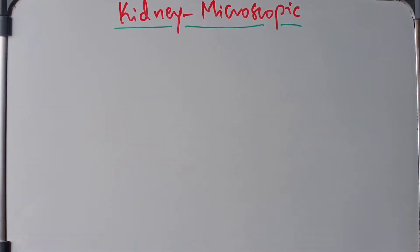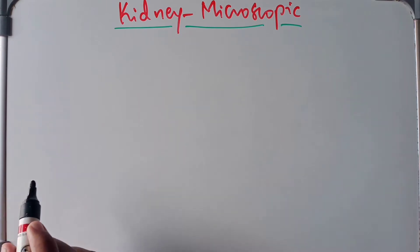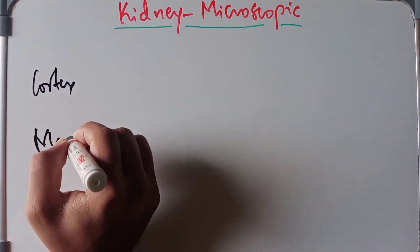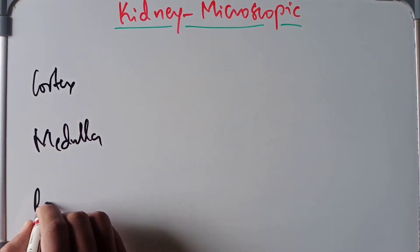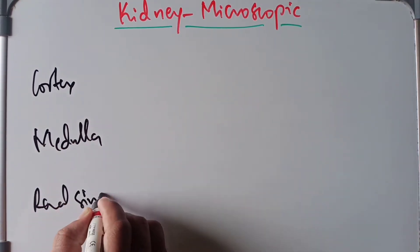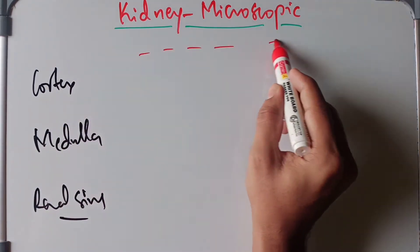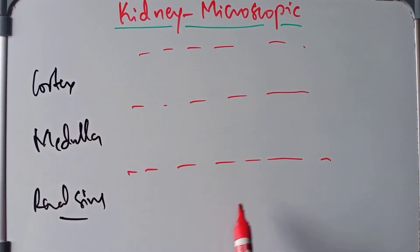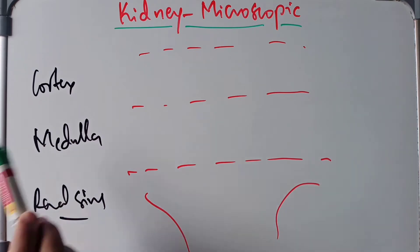Hello guys, welcome back. In this video we are going to discuss the microscopic structure of the kidney. Inside the kidney we have the cortex, then comes the medulla, and finally we have the renal sinus. So these are the three structures of the interior of the kidney — this is the cortex, this much is the medulla, and this is the renal sinus.